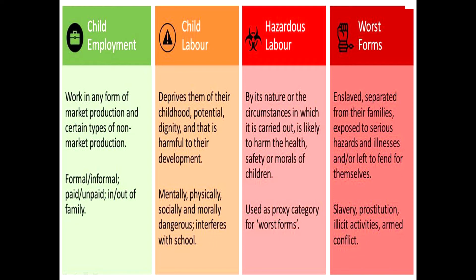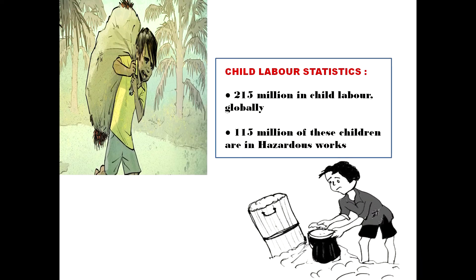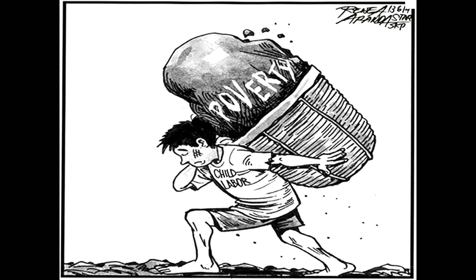Children in the worst forms of child labor are exposed to serious hazards and illness. According to statistics, there are 215 million children in child labor worldwide, of which 115 million are in hazardous work. The causes of child labor include primary causes, cultural causes, and macroeconomic causes. Macroeconomic causes involve family factors such as unemployment, large families, poverty, and lack of parental support.